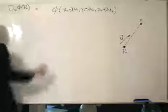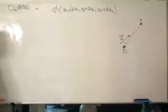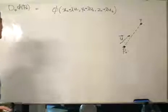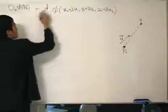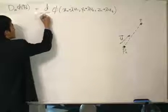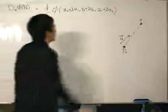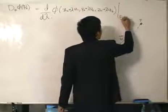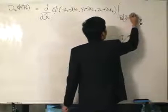We are going to differentiate with respect to a certain variable. That variable is lambda, and we're going to evaluate it at p0, which is the same as lambda equals zero.